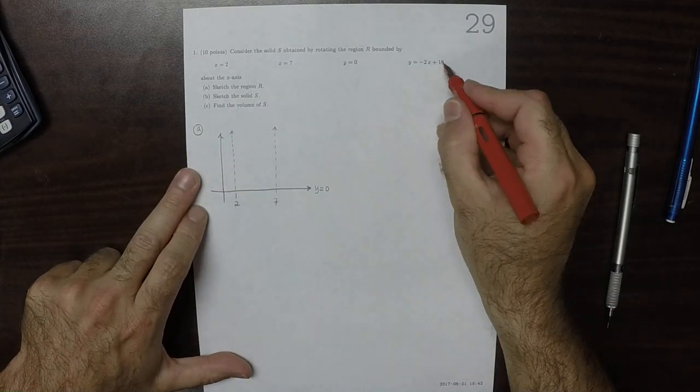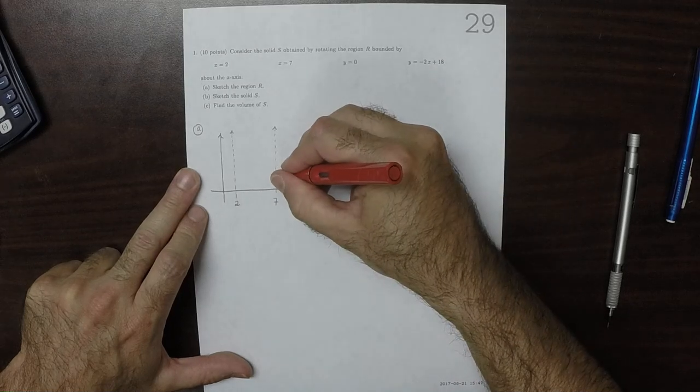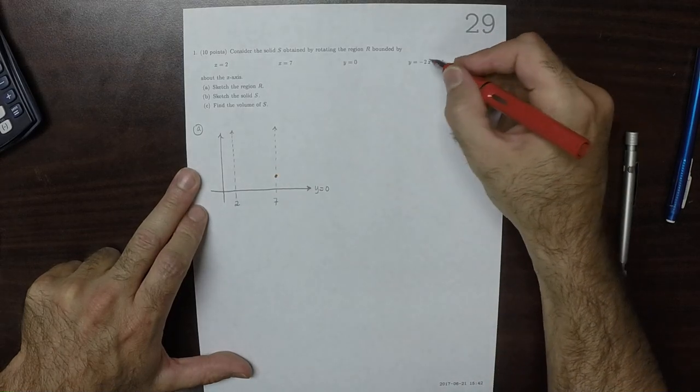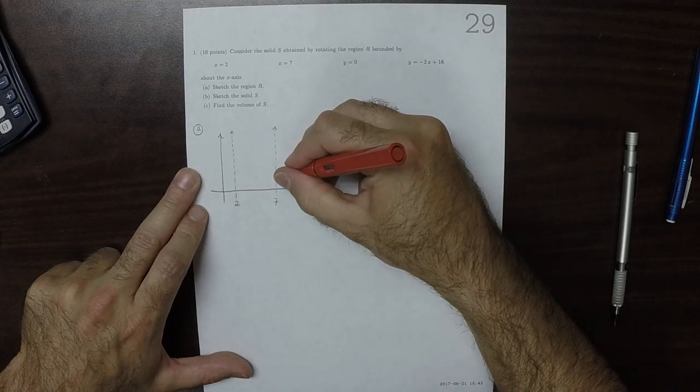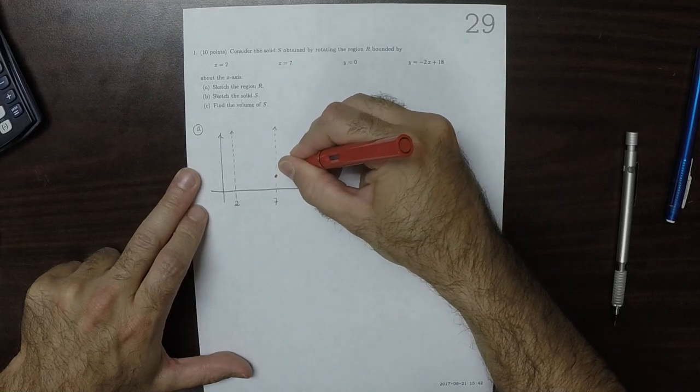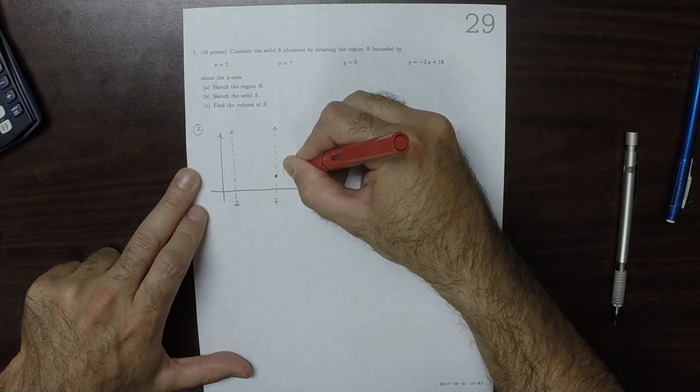So plugging in 7, that'd be negative 14 plus 18. So negative 14 plus 18 is 4. So this is the point 7, 4.